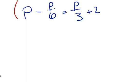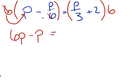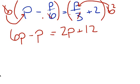So we're going to take this side and multiply it by 6, and if I do that to this side, I have to do it to this side also. So 6 times p gives me 6p. Now 6 times p over 6 — these 6s cancel — and all I'm left with is negative p. And when I multiply 6 times p over 3, my 3 and my 6 cancel, and all I'm left with is 2p. Then 2 times 6 is 12. So combining terms: 6p minus p gives me 5p, equals 2p plus 12.